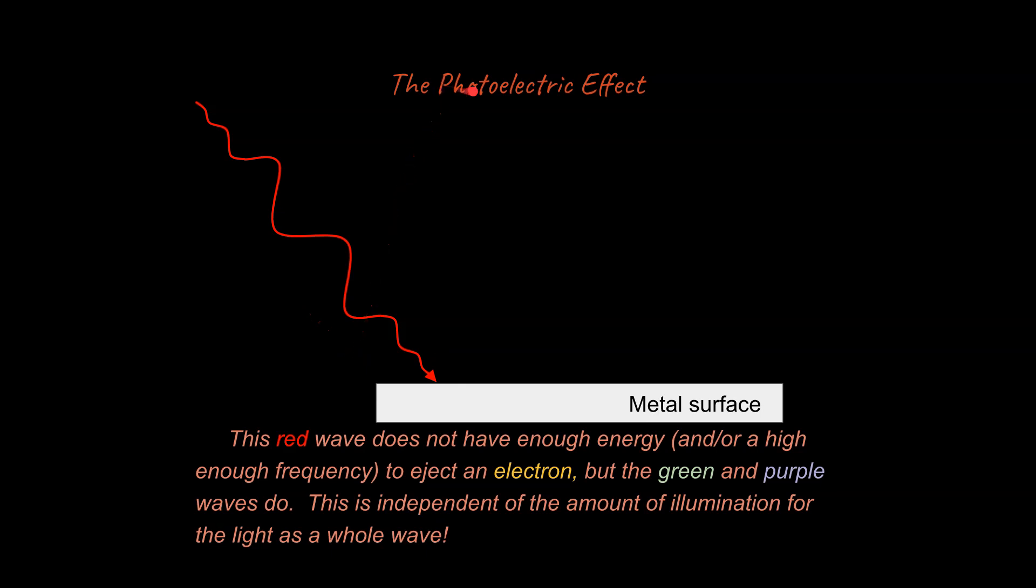So with this visualization, by the way, when we say photoelectric, we're talking about light dealing with electricity or electrons specifically here. And so with this graphic, we're going to say this red wave does not have enough energy or a high enough frequency to eject an electron. The green wave does, though, and the purple wave does. So this is a higher frequency, this is a higher energy wave that's coming in, and it's kicking off.